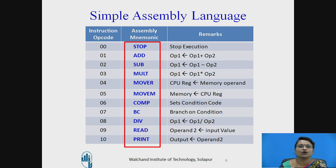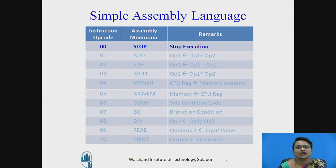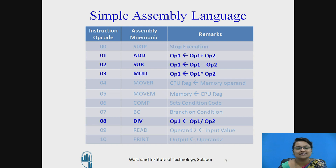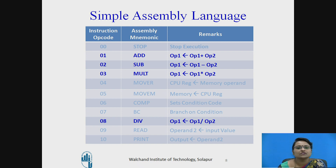Let us see all these assembly language schemes one by one. The first one is STOP, whose opcode is 00, which is used for stopping the execution. The next four are mathematical operations: addition, subtraction, multiplication, and division, with their opcodes as 1, 2, 3, and 08.